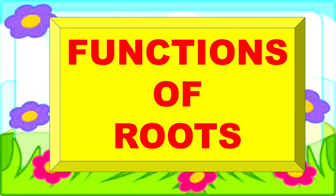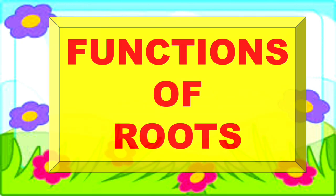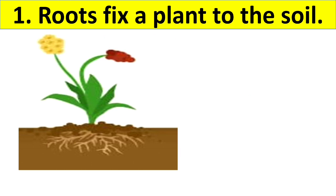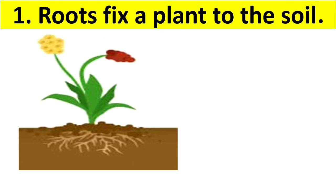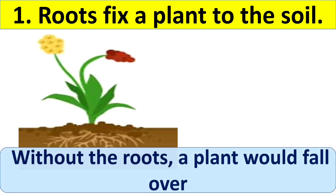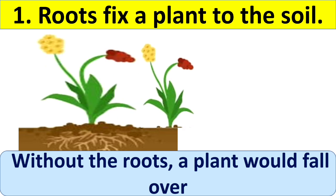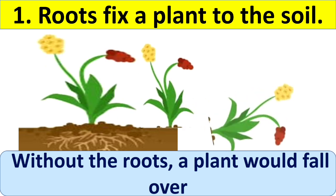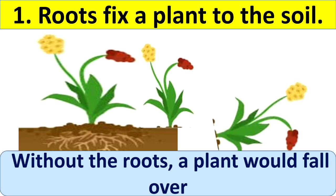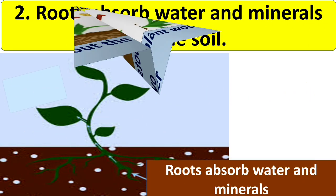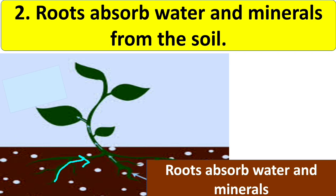It is also important to know the functions of roots. The first function is that roots fix a plant to the soil — if there were no roots, a plant would fall over. The second function is that roots absorb water, minerals, and nutrients from the soil, which are then sent to other parts of the plant through the stem.